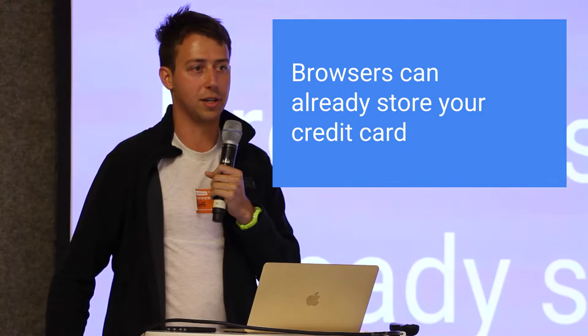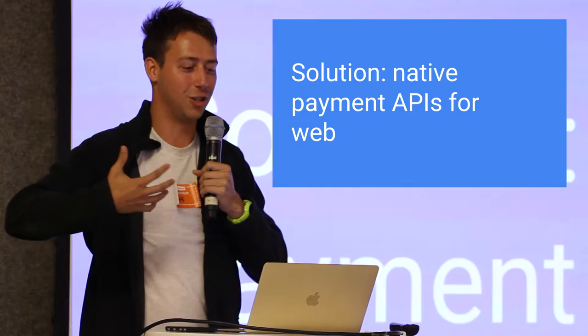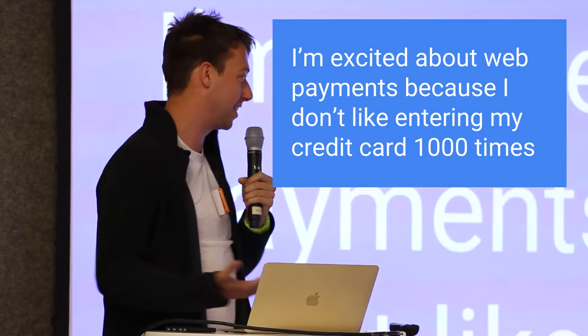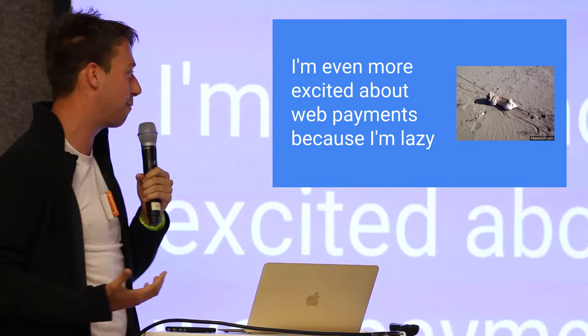If you use autocomplete in browsers, the browser already has the ability to store your credit card. So why can't we use the card the browser already has and expose that via JavaScript? That's the genesis of native payment APIs — using the credit card you already have in the browser for the web. I'm really excited because I can't remember my credit card and I don't like entering it a thousand times. And I'm even more excited because I hate building checkout forms.